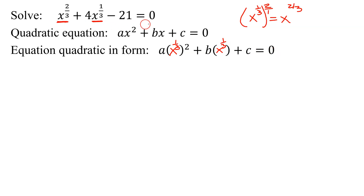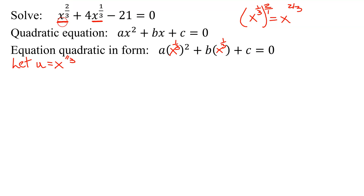You could solve this equation now by directly factoring, but you'd have to have x to the one-third as the first term in each of your parentheses. That often gets confusing. So I think it's easier to do a u-substitution. We let u equal x to the one-third, and then x to the two-thirds is just going to be u squared. So my equation becomes u squared plus 4u minus 21 equals zero.